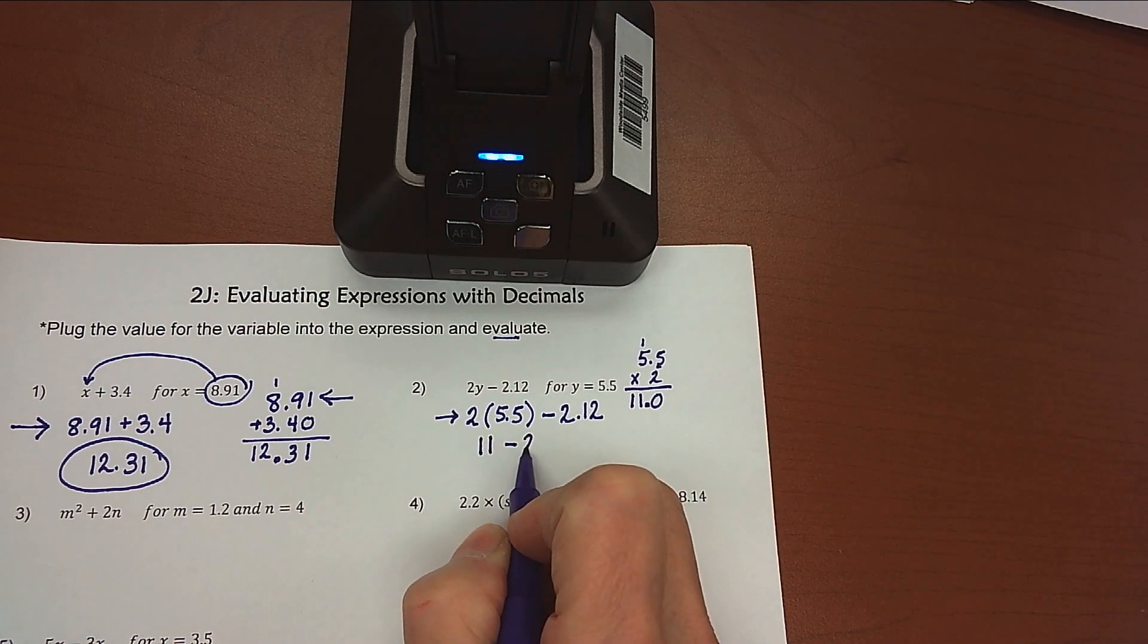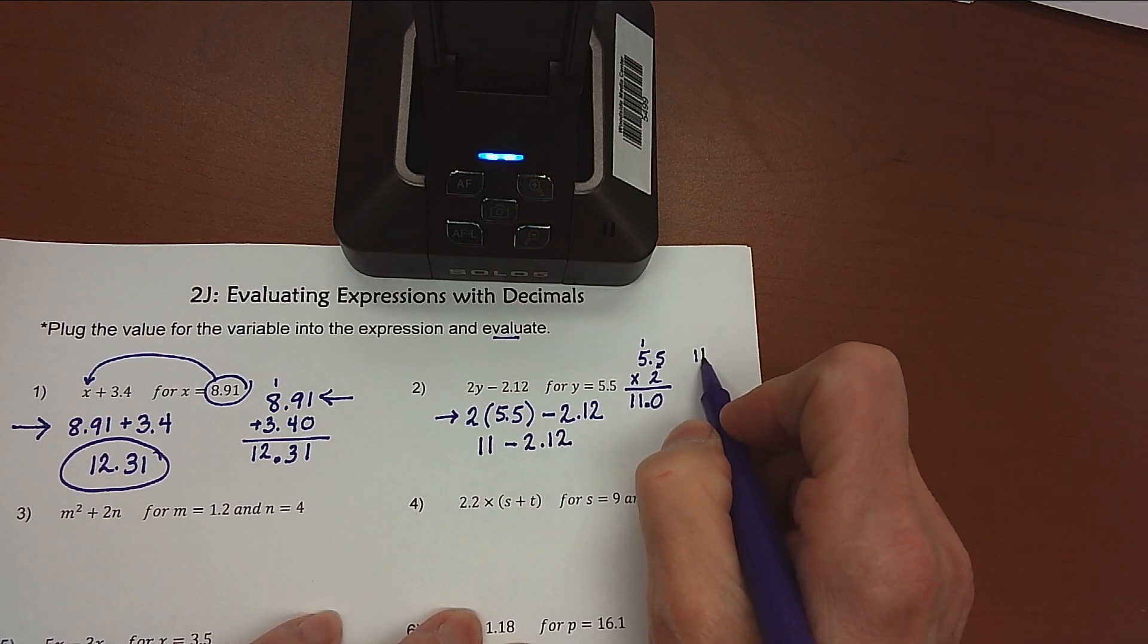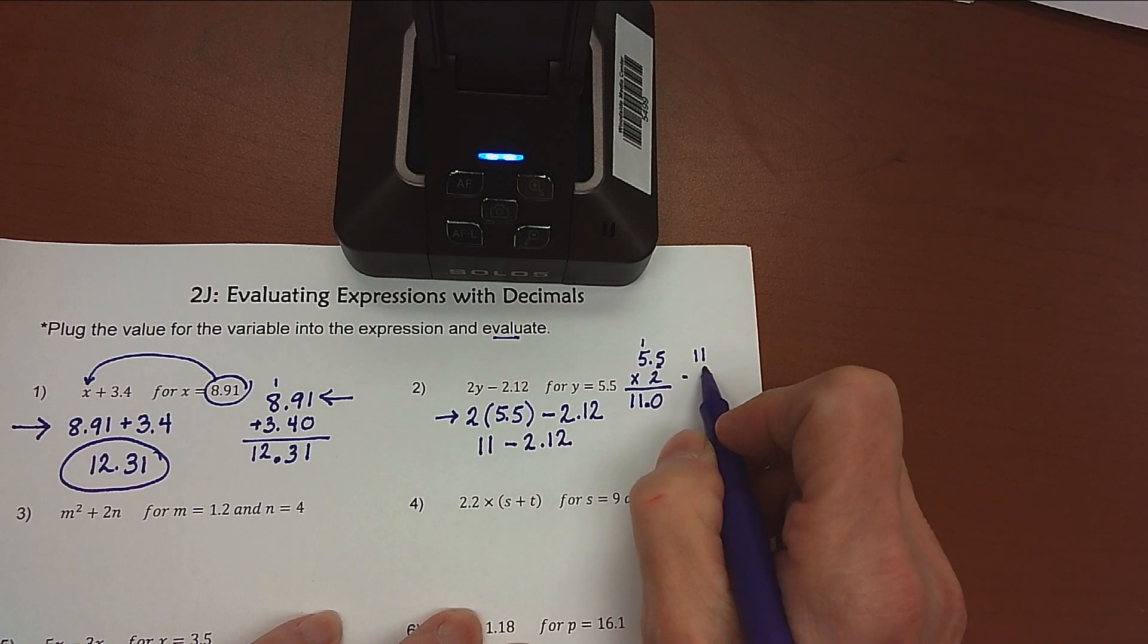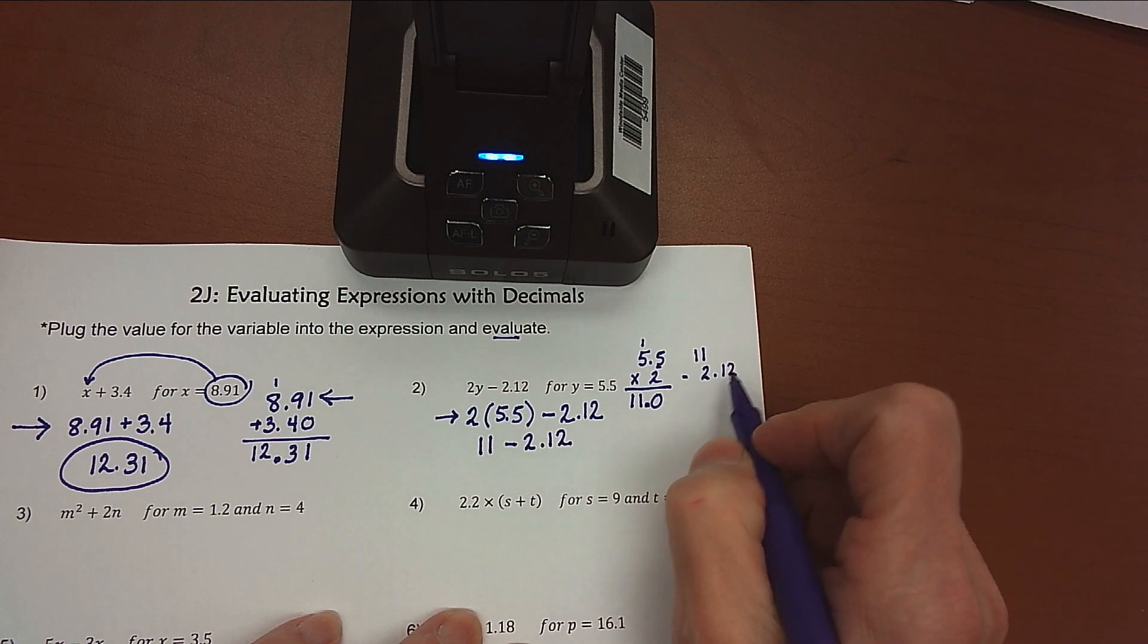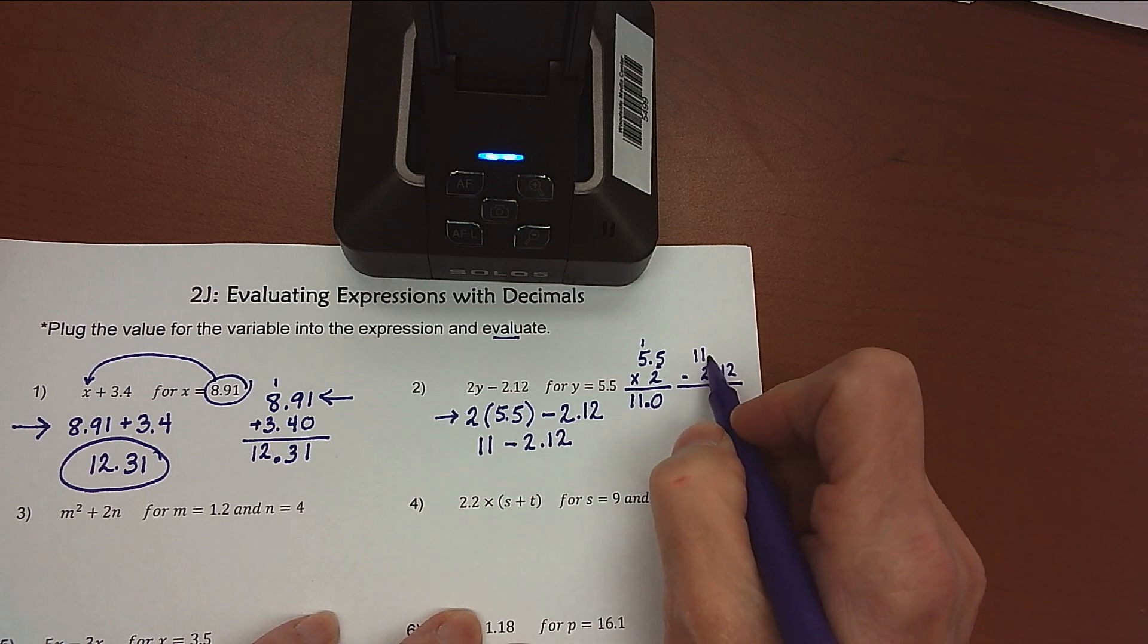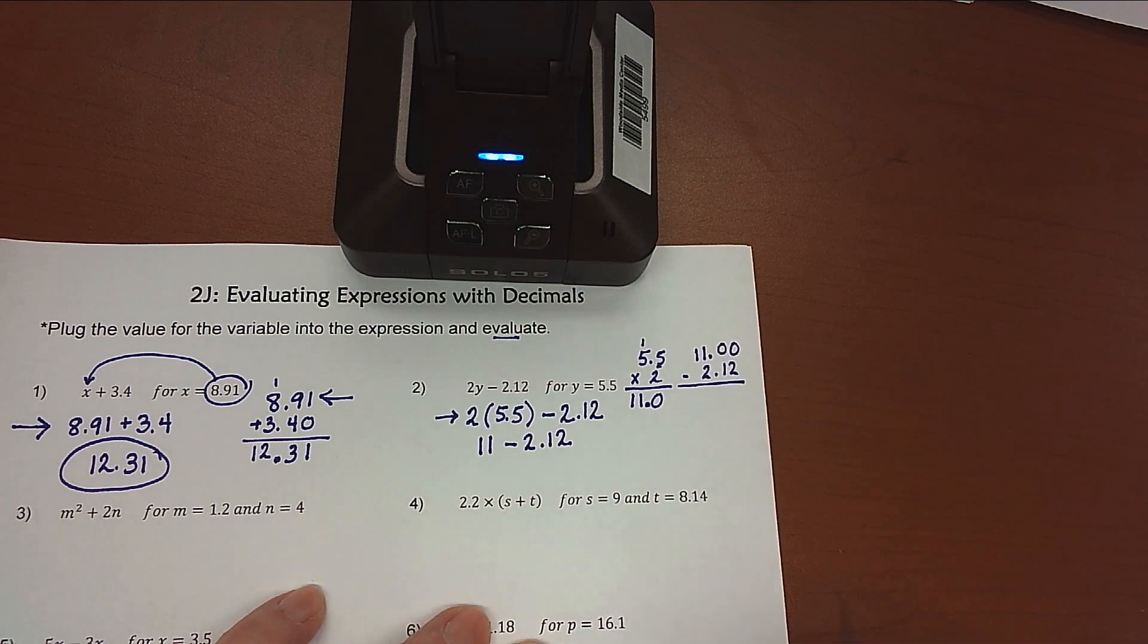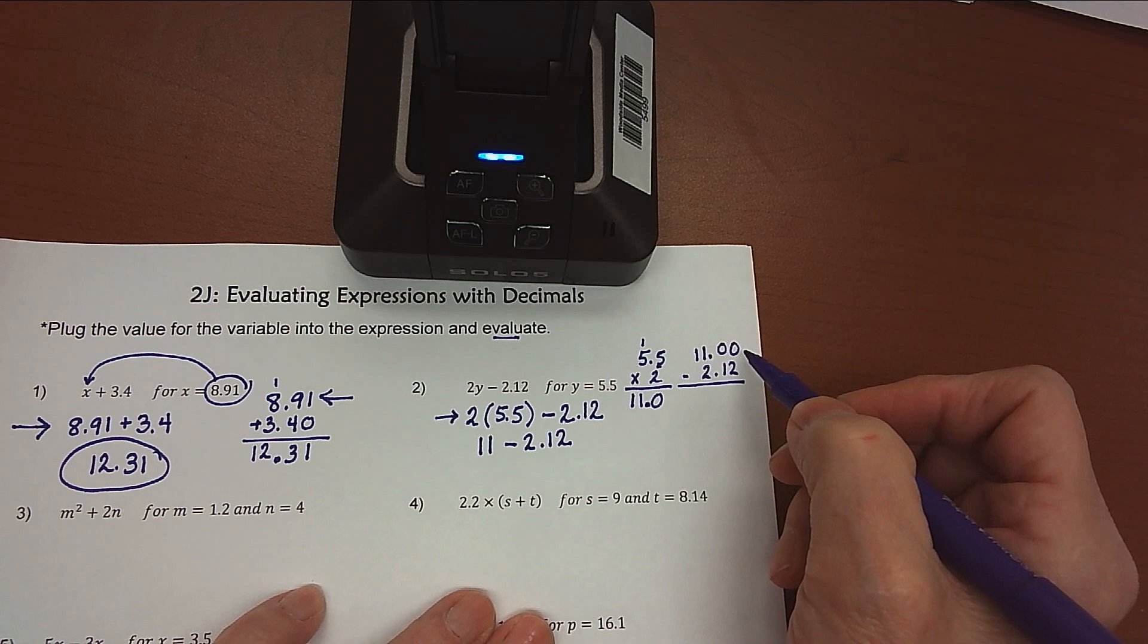And then from that 11, I'm going to subtract 2.12. So I'm going to show that problem over here, 11 minus 2.12. So there's no decimal point in 11. Therefore, I know that it's going to be after the last digit in that number. And then I'm going to add 0's to fill in as placeholders. I can't take 2 away from 0,